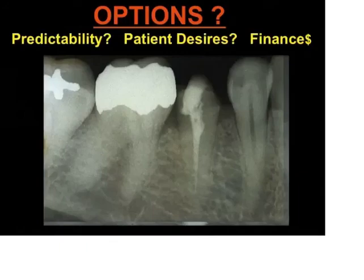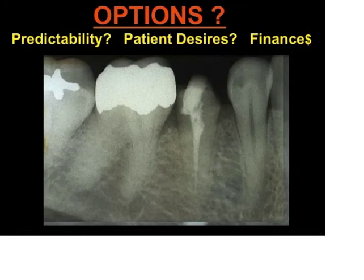Here you see this radiograph of this lower right second bicuspid, which has a longstanding history of root canal therapy with the tooth never being restored.